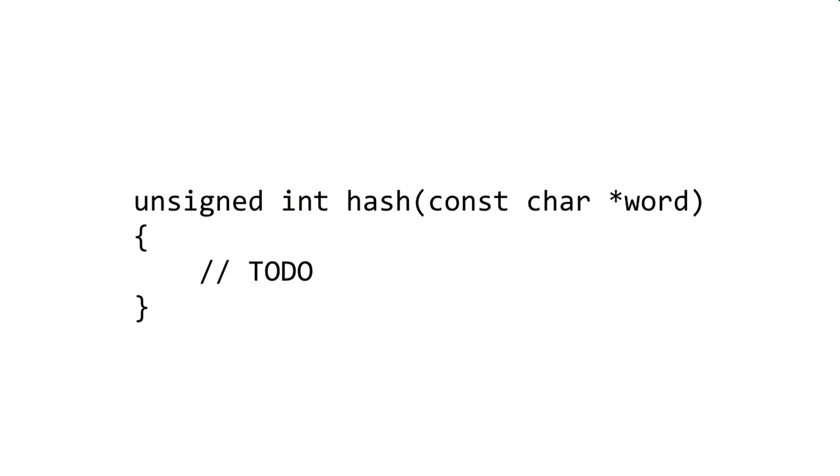So what is the hash function? Well, the hash function is going to take a char star or a string as input representing the word that you're going to hash, and it's going to return an unsigned integer, an integer that won't be negative, representing which index into the hash table you should use that corresponds to that particular word.